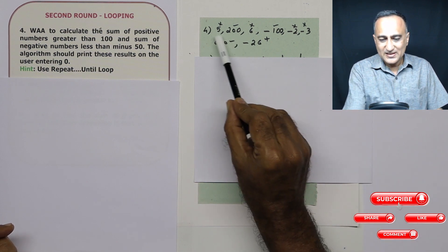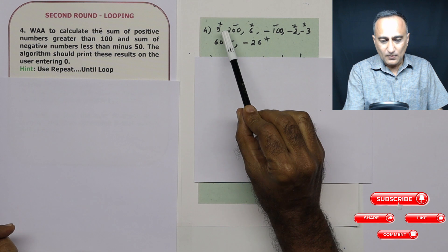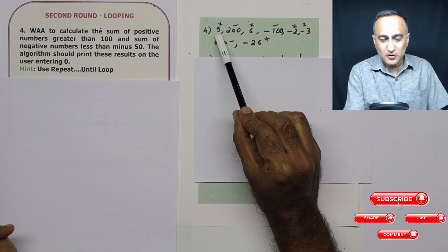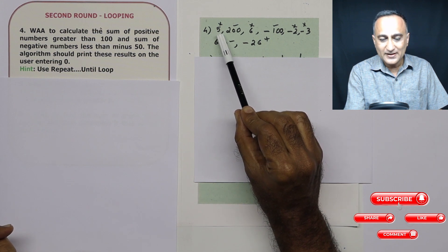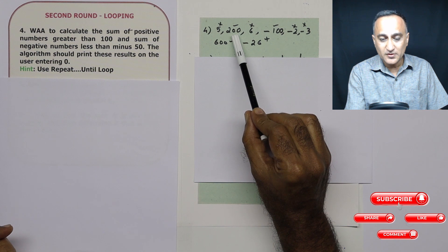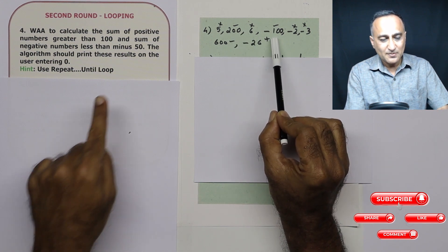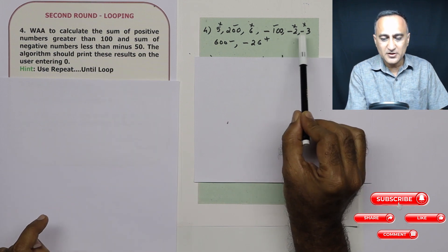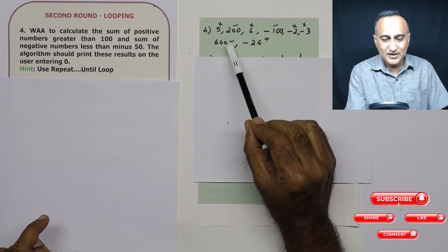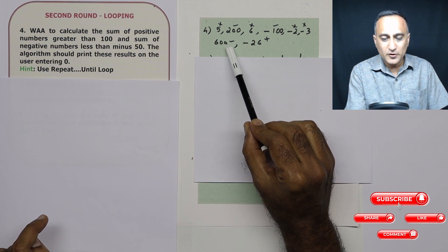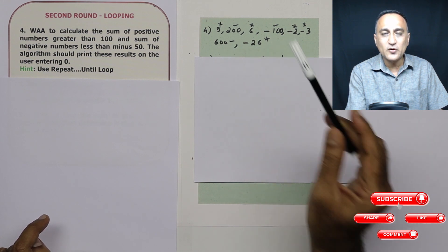To understand this problem, let's say this is the input: 5, I will not add it to the sum because it is not greater than 100. 200, I will add it to positive sum. 6, I will not add. Minus 100, yes, because it is less than minus 50. Minus 2, minus 3, I don't bother. 600, I do add it to positive sum. Minus 26, I do not add.